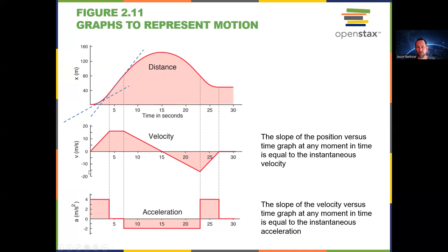Those velocities are negative, but the negative sign is just indicating direction. That's why the object is speeding up between those points — it's getting steeper and steeper on the position versus time graph, because more ground is being covered in the same amount of time.